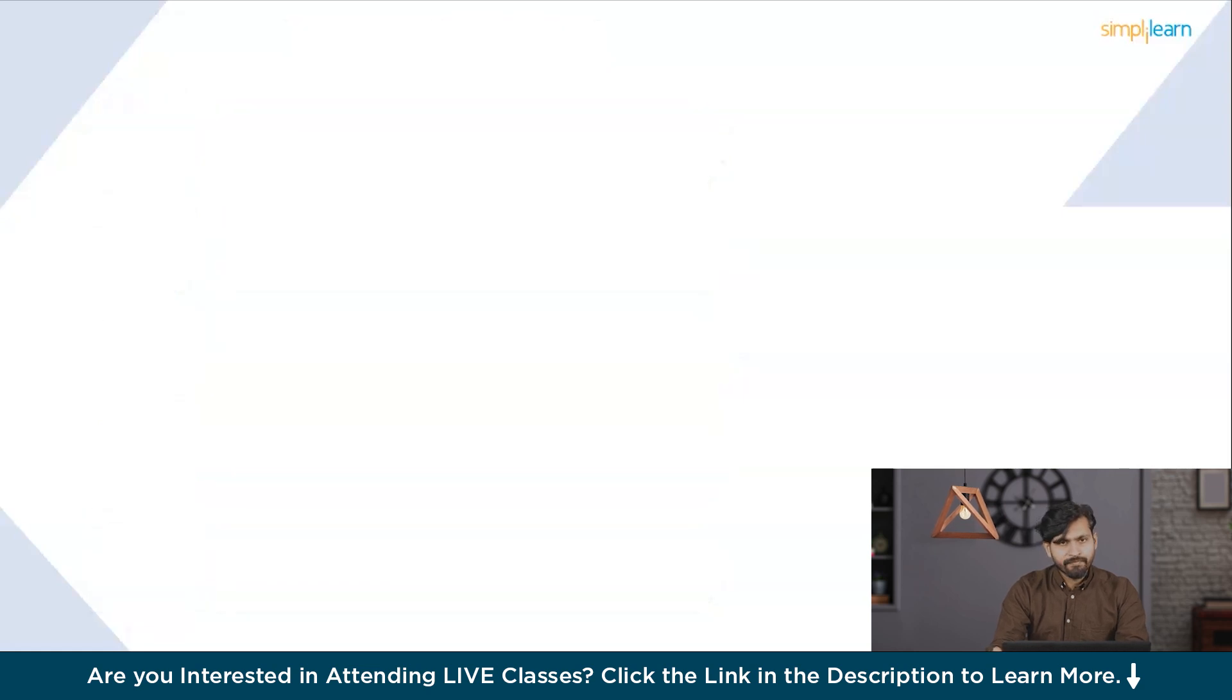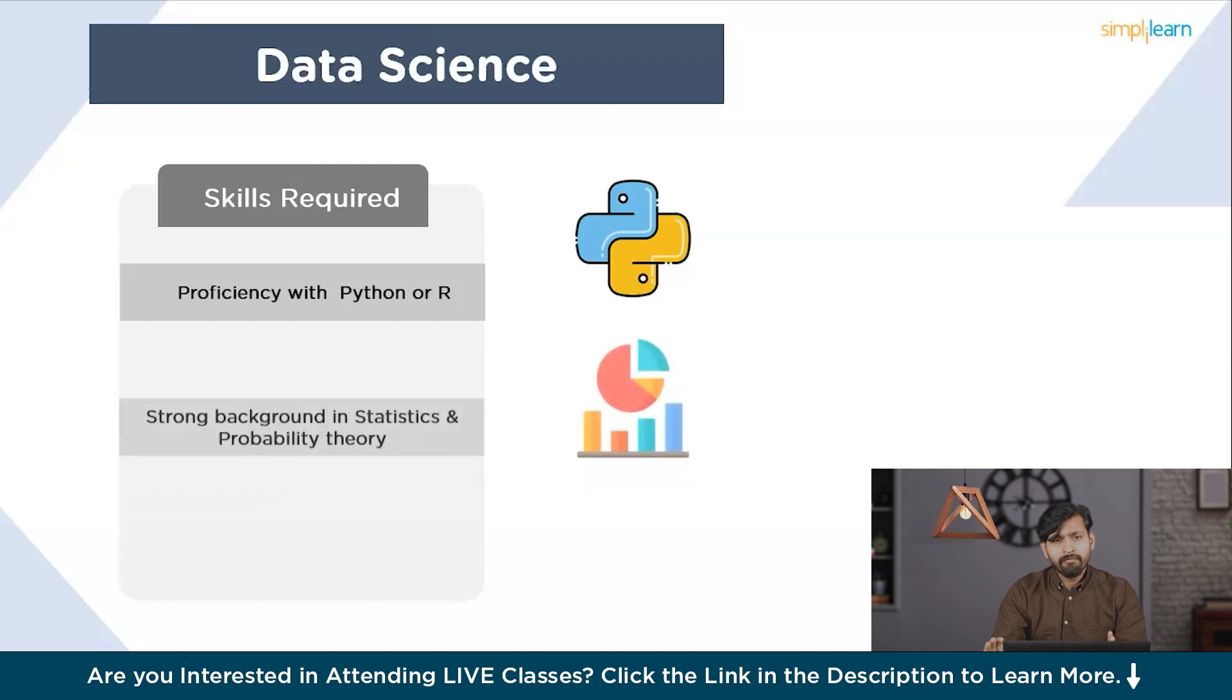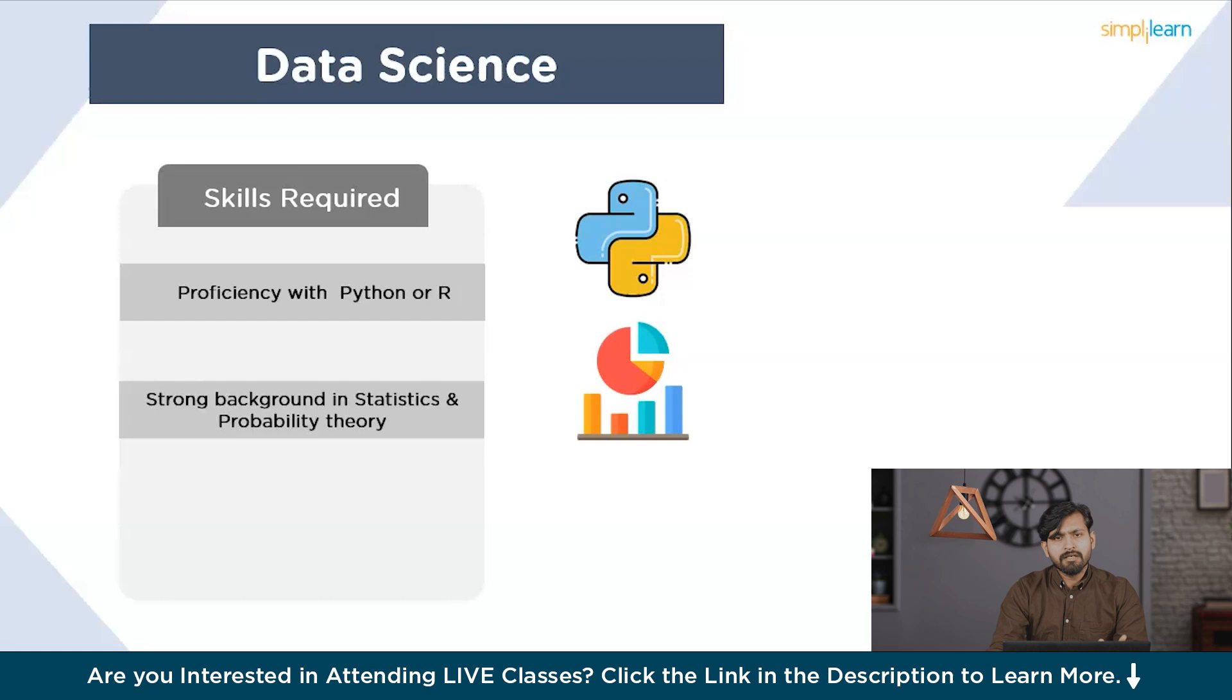What are the skills required to become a data scientist? To thrive as a data scientist, individuals need expertise in programming languages such as Python or R. Data scientists use these languages to manipulate data, build models, and deploy solutions. They should be well-versed with statistics and probability theory, possessing a strong foundation to understand and apply advanced analytic techniques. They also have knowledge of machine learning algorithms and deep learning techniques. Data scientists are proficient in a wide range of algorithms, from linear regression to NLP, to decision trees, and reinforcement learning. They are also well-versed with data visualization and storytelling, creating visualizations and narratives to communicate insights effectively to non-technical stakeholders, making complex concepts accessible and actionable.